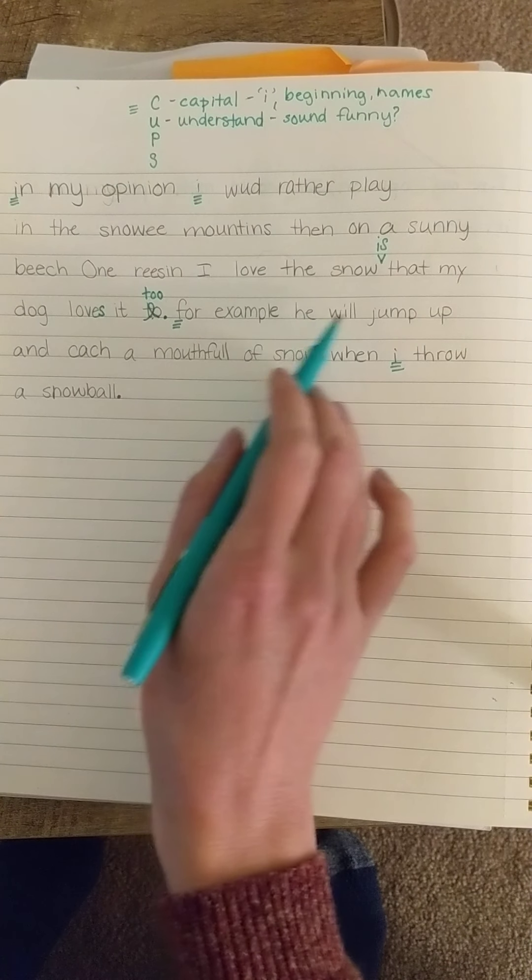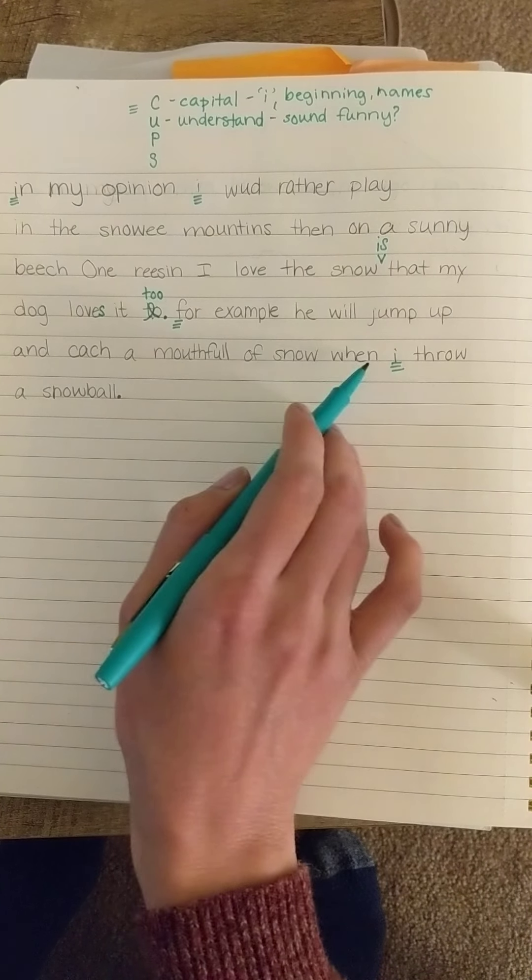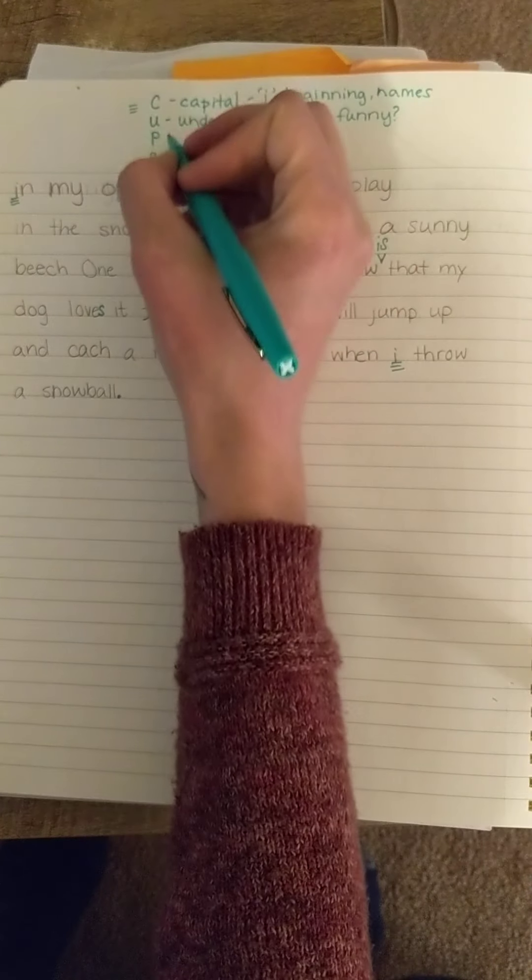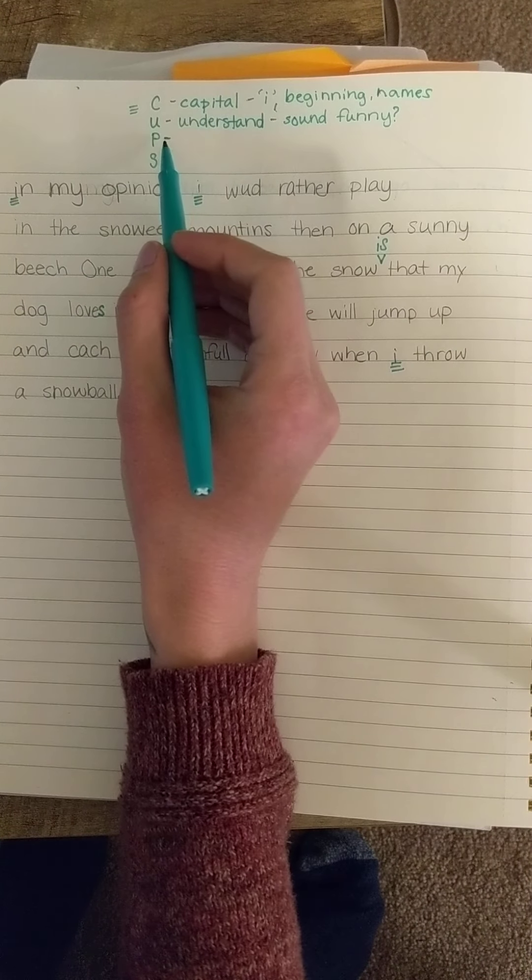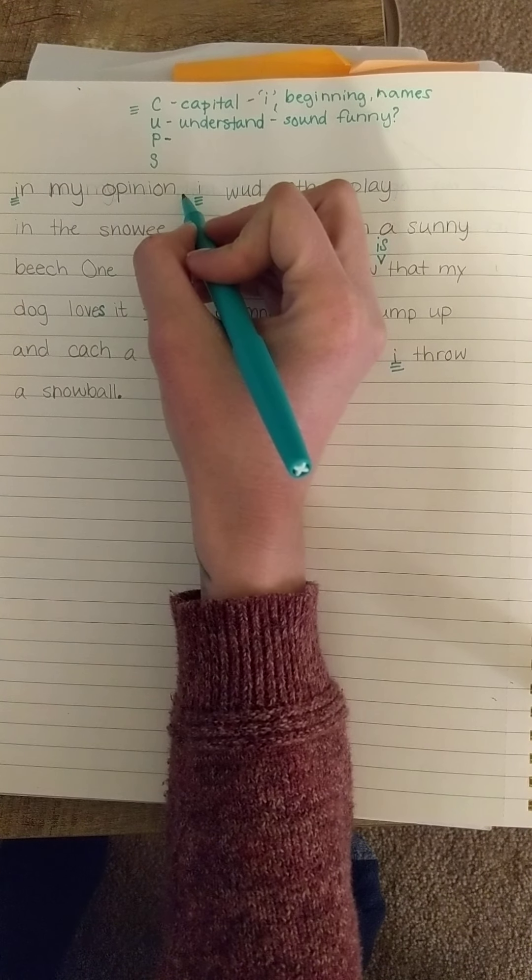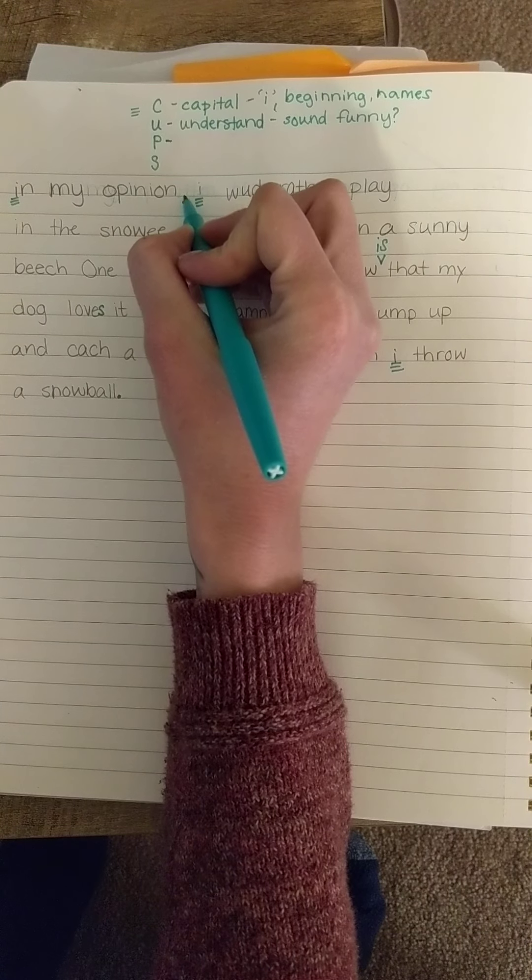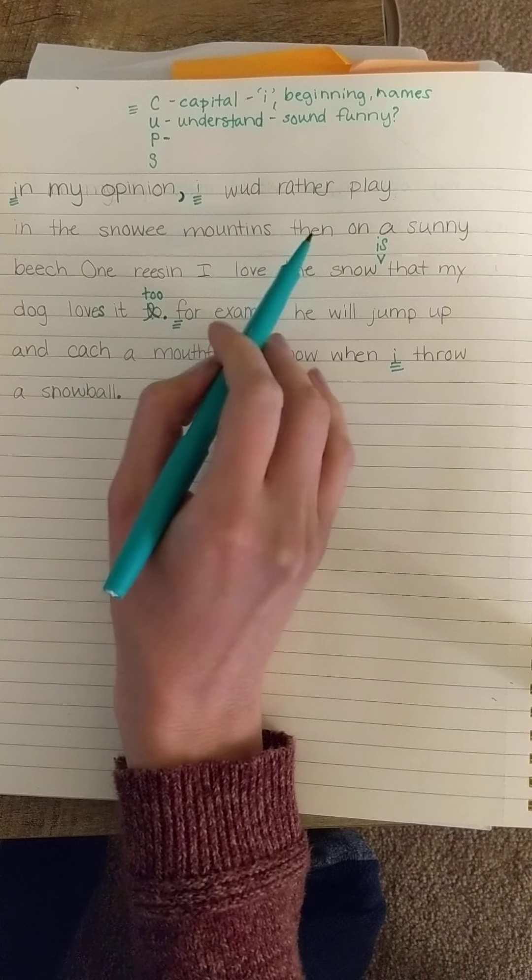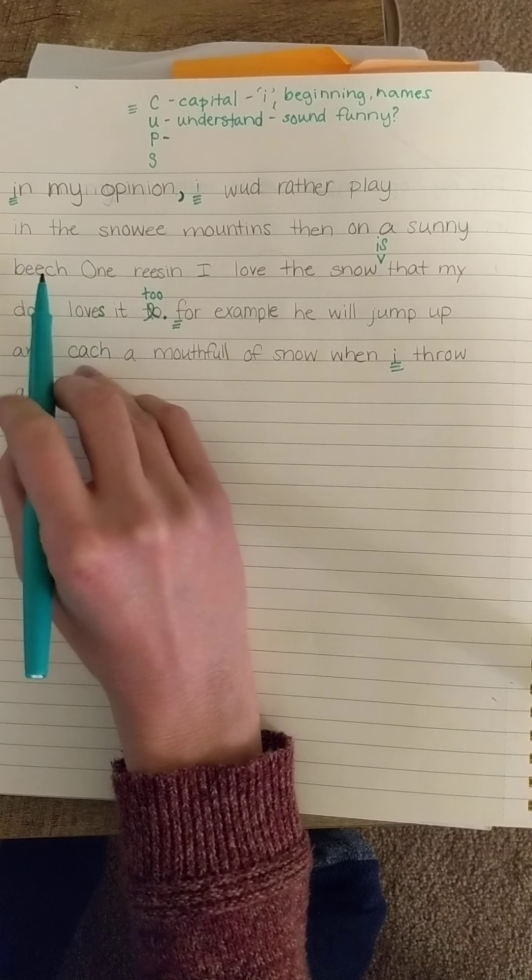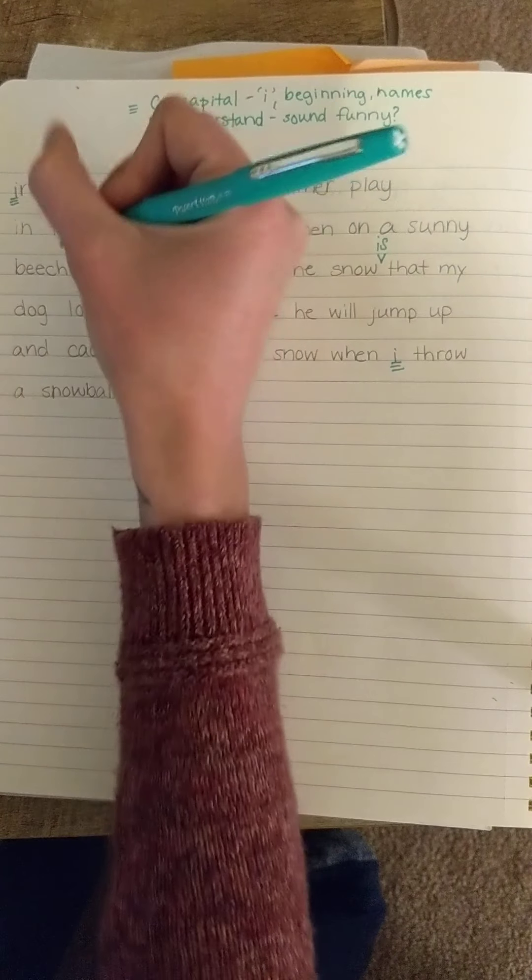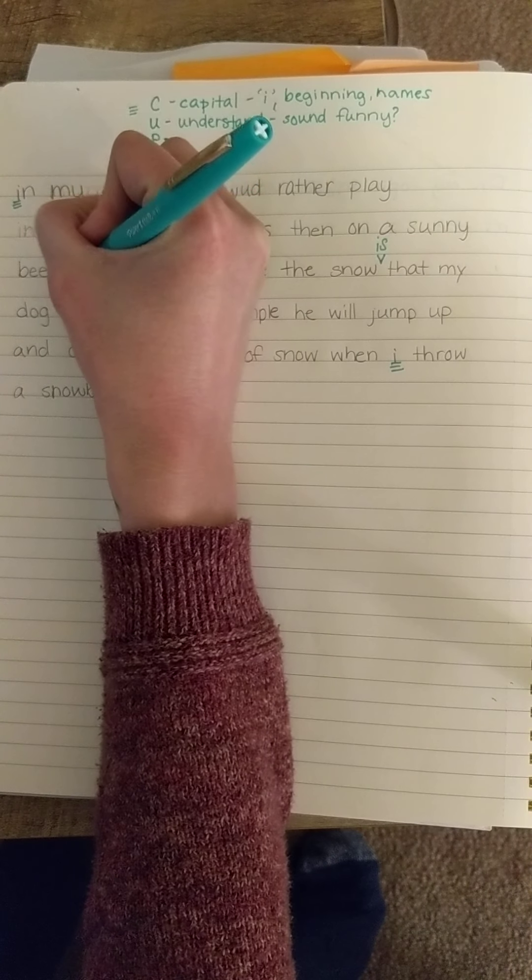For example, he will jump up and catch a mouthful of snow when I throw a snowball. That's great, I think my reader will understand all of it now. Now I'm going to go ahead and look for punctuation marks. In my opinion, I have to pause there. So I'm going to put a comma. I would rather play in the snowy mountains than on a sunny beach. That seems to be the end of my opinion in my introduction sentence, but I forgot to end the idea with a period.